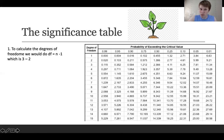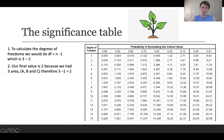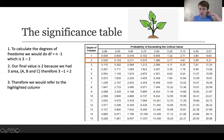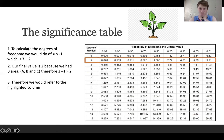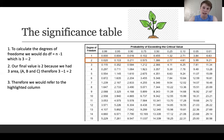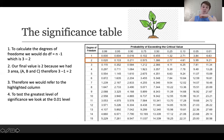So degrees of freedom = n - 1 = 3 - 1 = 2. Note: I accidentally wrote 3 - 2 on screen, please ignore that — it should be 3 - 1. With a degree of freedom of 2, we focus on that column in the significance table. To test the greatest level of significance, we look at the 0.01 level, where the critical value is 9.21.